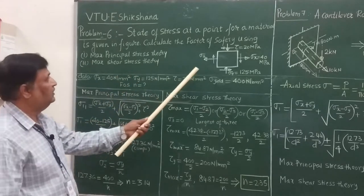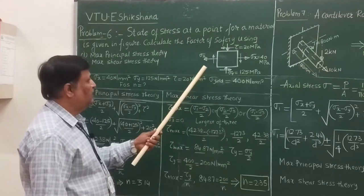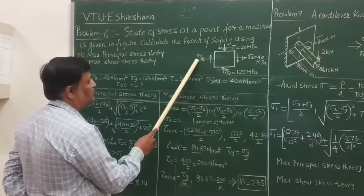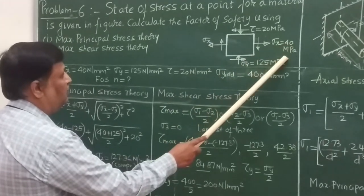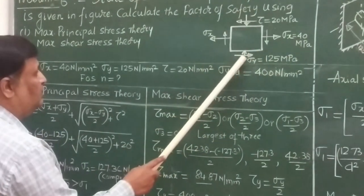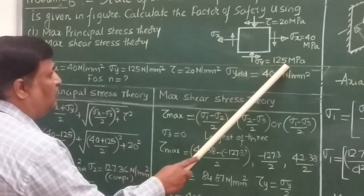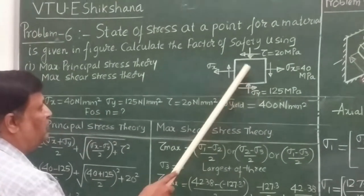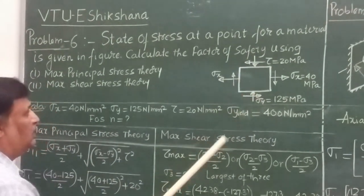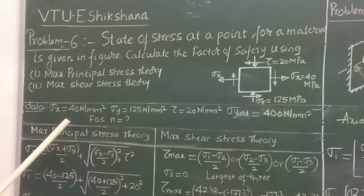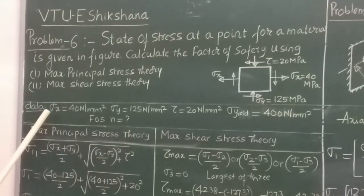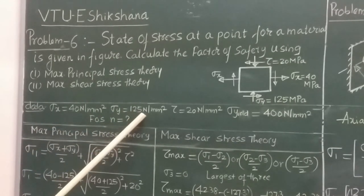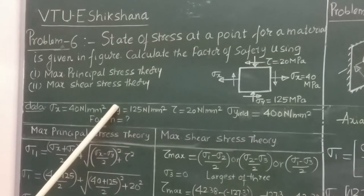The figure is given here. We have a biaxial stress field. You can see along the x-axis the direct stress sigma is 40 MPa. Along the y-axis there is a direct stress of 125 MPa. This one is tensile in nature and this one is compressive. So to solve this problem, first we will write the data given: stress along x-axis is 40 N/mm² and along y-axis is 125 N/mm², which is compressive in nature.